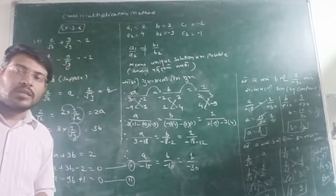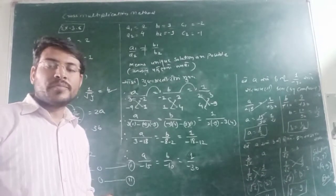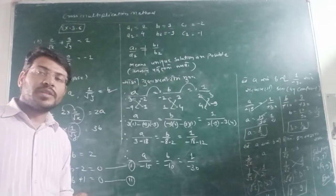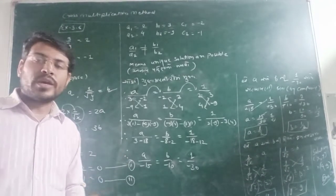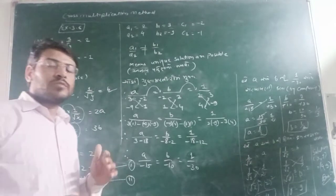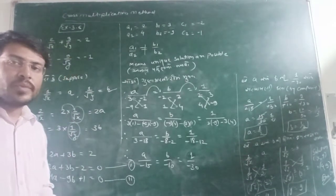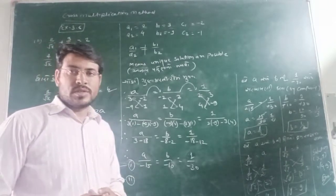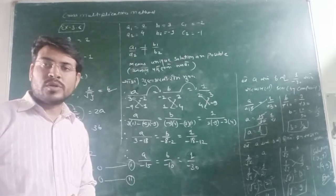Chapter number 3, Linear Equation of Standard Number 10 is going on. We have discussed all three methods related with this chapter. Today, we are going to discuss once again Cramer method across multiplication method with a different kind of question. We are discussing exercise 3.6, question number 2.